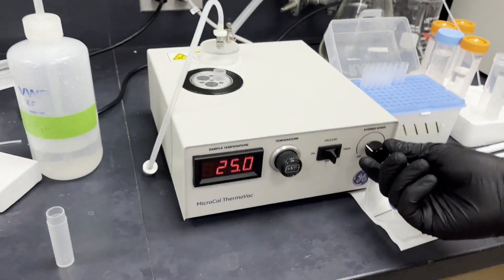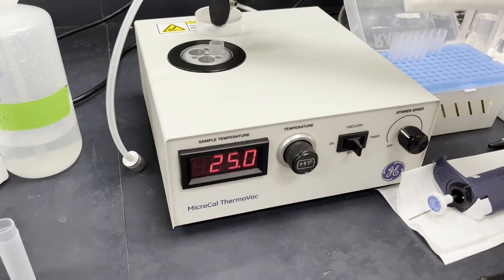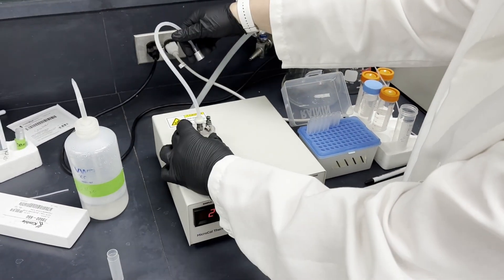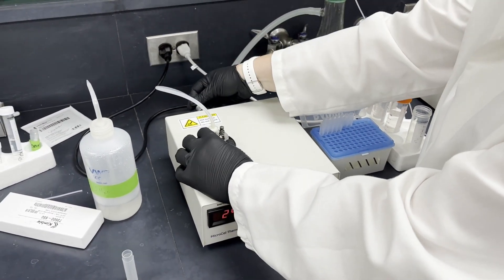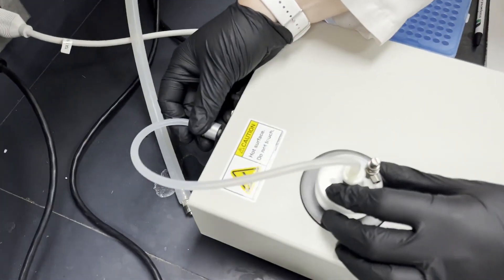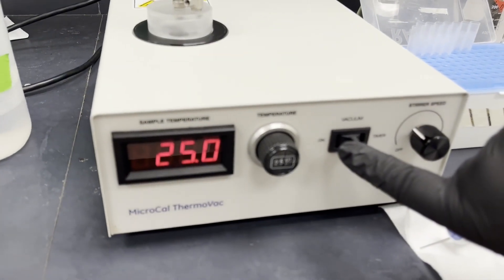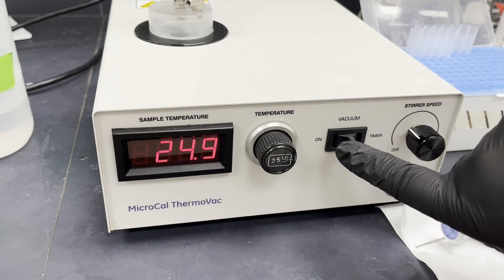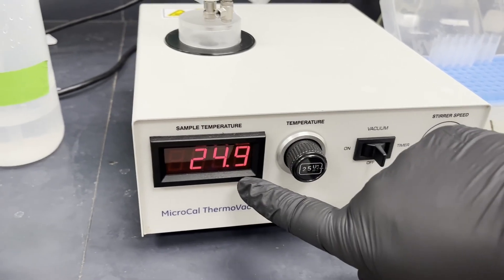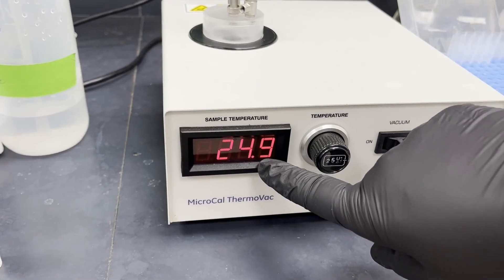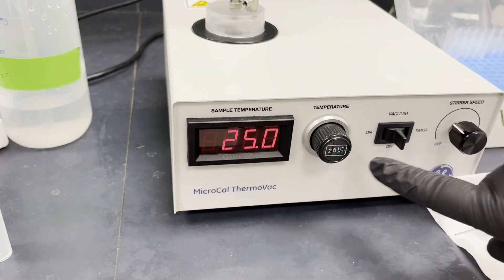This has a stirring speed which you can adjust, so it's actually stirring in there. In addition to stirring you can attach this in the back and then flick the switch over to the timer and it will degas for five minutes. Also, if you're running your samples at a lower temperature or a higher temperature, you can pre-equilibrate your samples to the desired temperature.